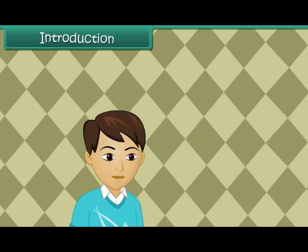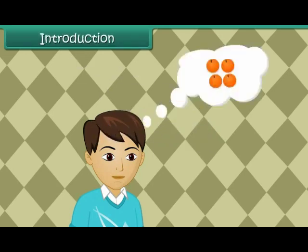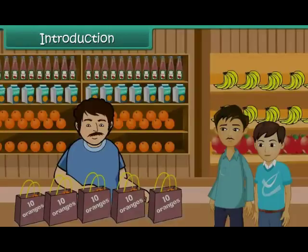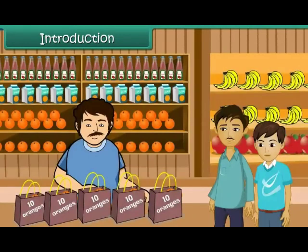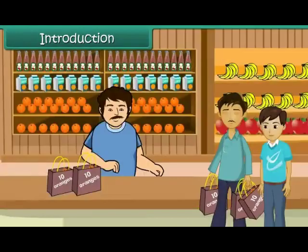Vivek loves oranges. He's come to the fruit market with his father to buy oranges. He finds one shopkeeper selling oranges in bags of ten each. His father buys three bags for Vivek. In this lesson, you will learn to group and count by tens.